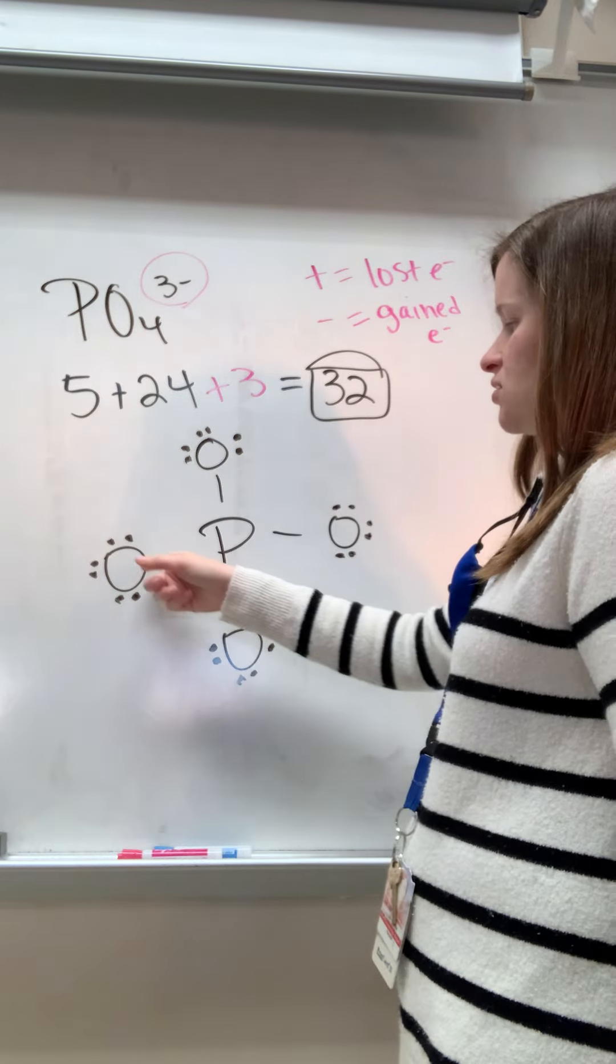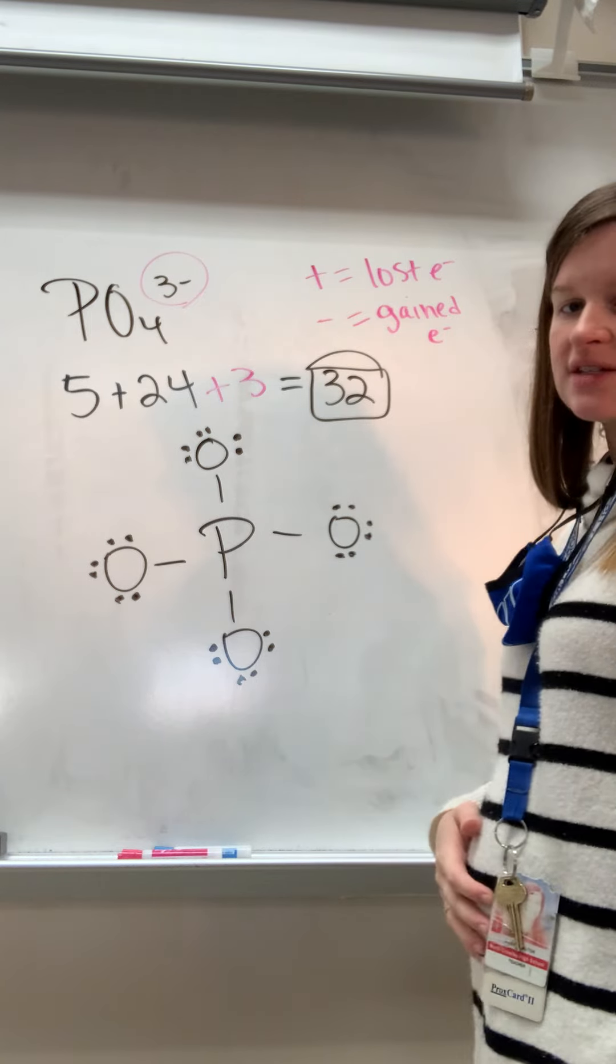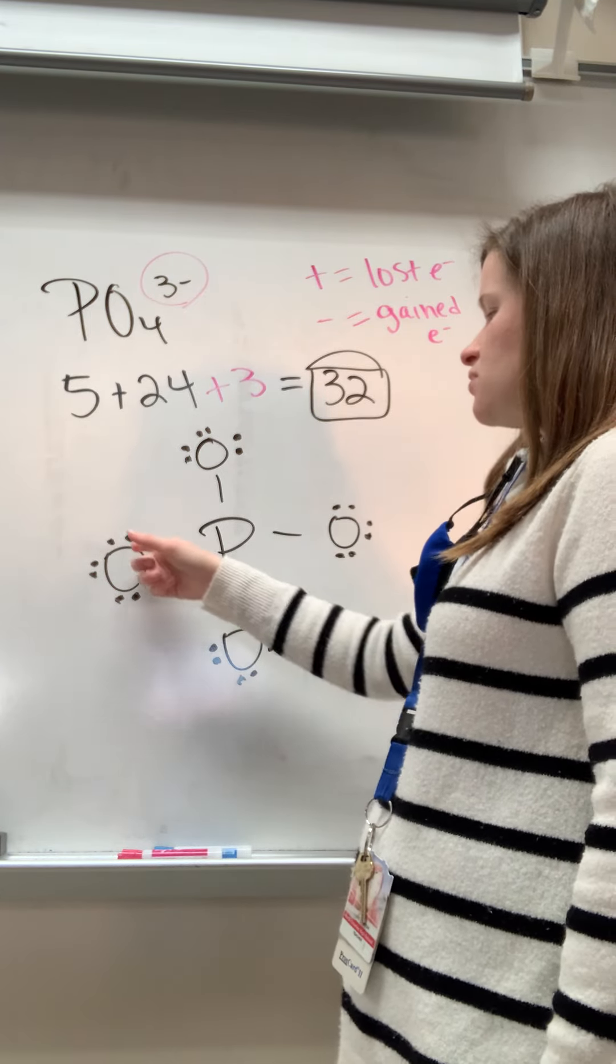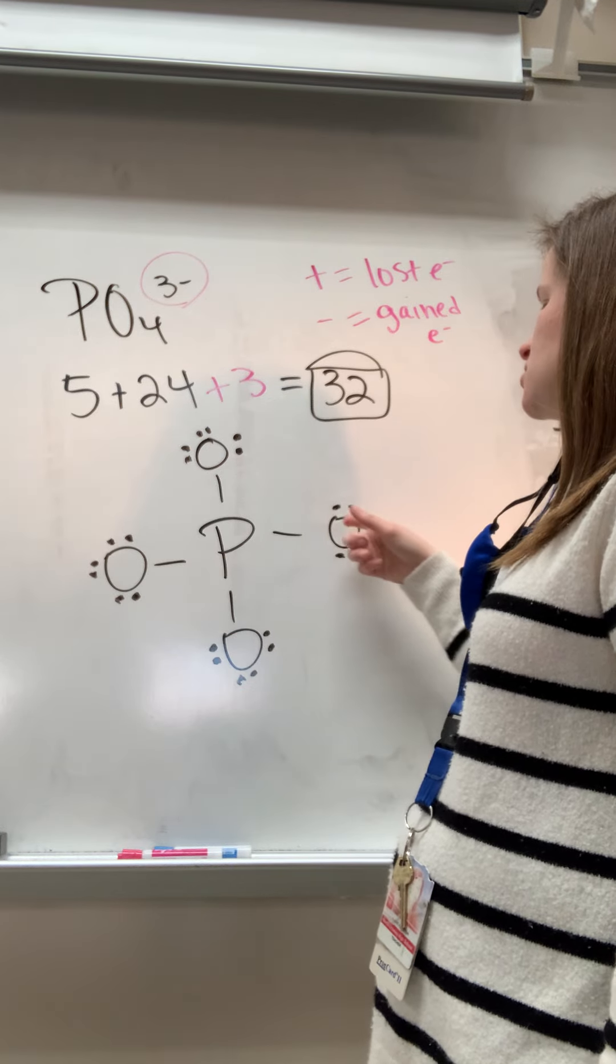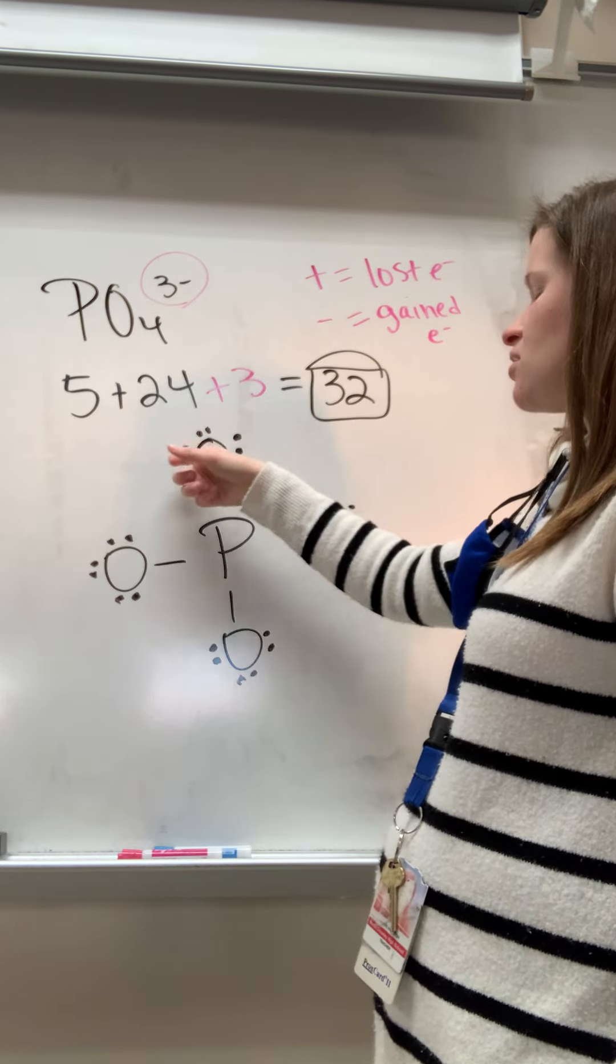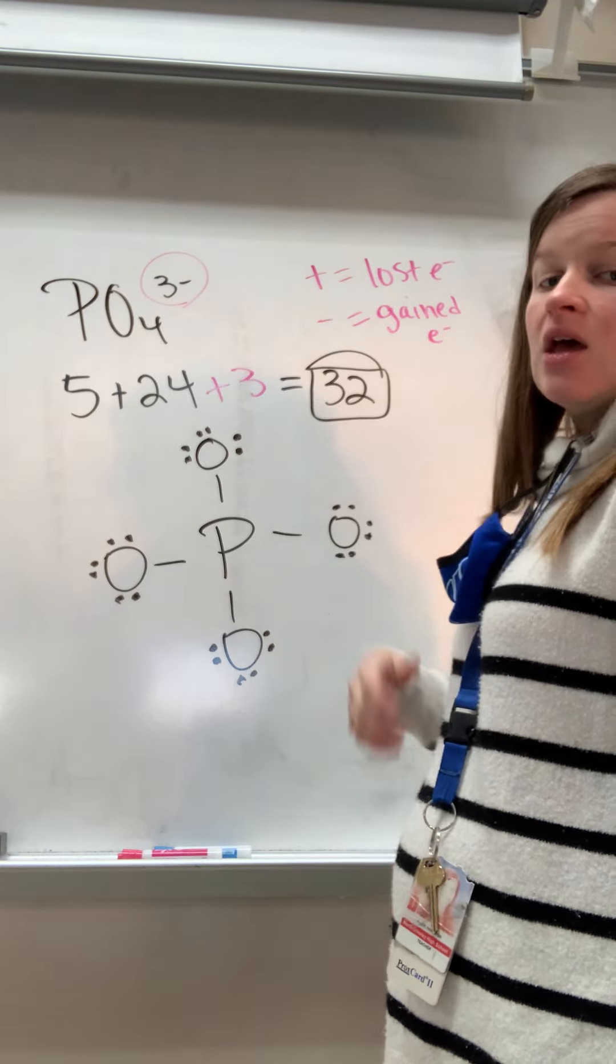And so we have 2, 4, 6, 8. So I actually have 8. Each oxygen looks the same, so each oxygen has 8. And in total I used up 32. [Counting to verify: 2, 4, 6, 8, 10, 12, 14, 16, 18, 20, 22, 24, 26, 28, 30, 32.] And phosphorus has 8. So we're good.